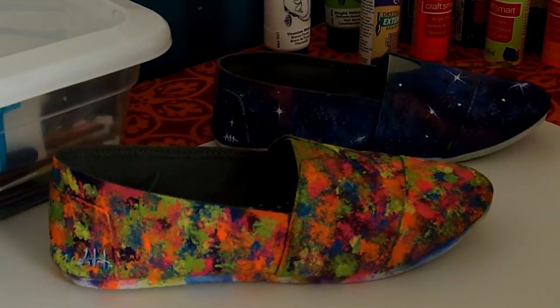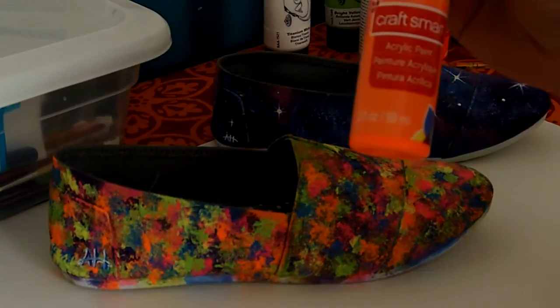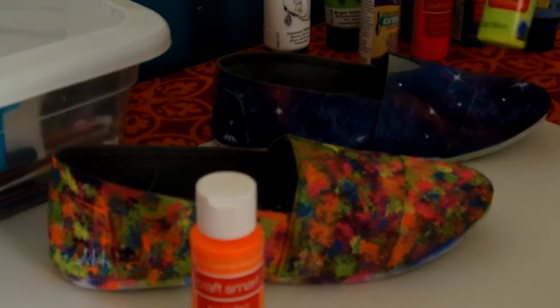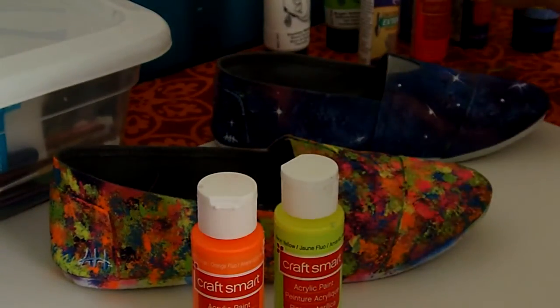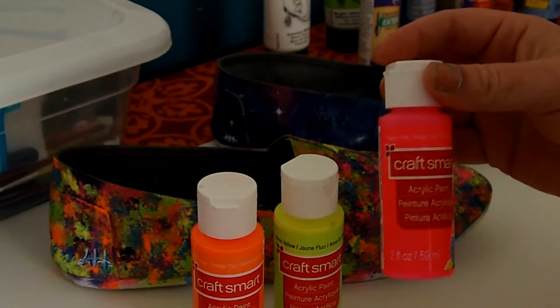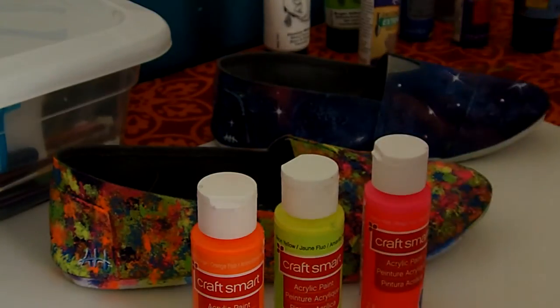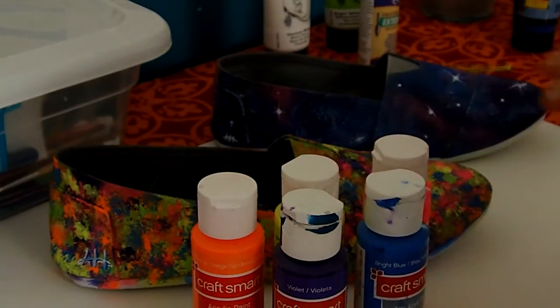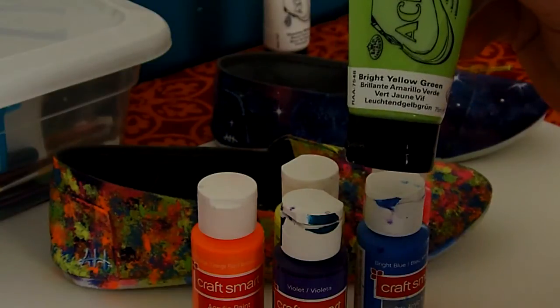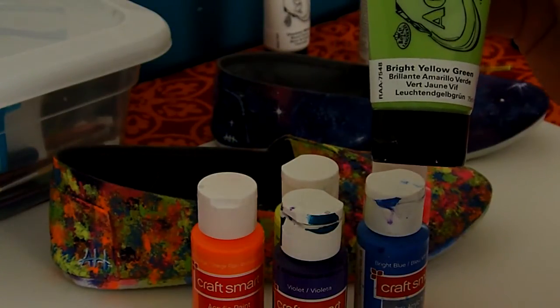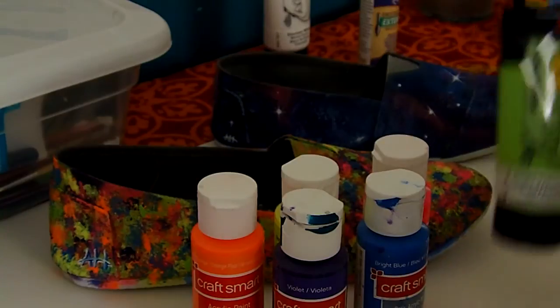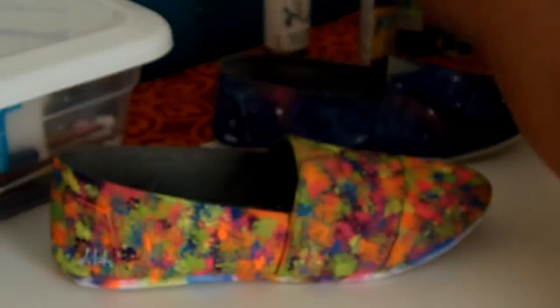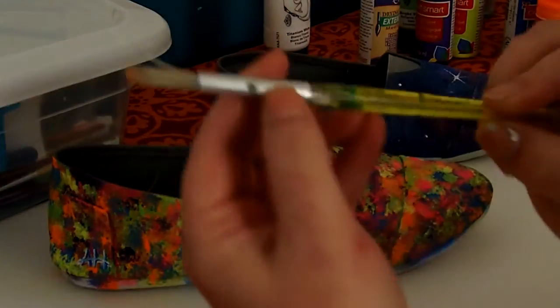For the neon painted ones, I used the Craft Smart paints. You can get them for like 69 cents at Michaels. I used neon orange, neon yellow Craft Smart, neon pink, violet, bright blue. And I got this one at Five Below—it's an acrylic artist paint in bright yellow green.